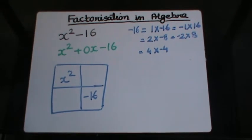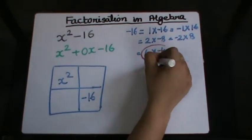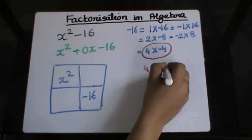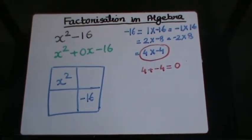I need to choose a factor pair which when combined gives me 0, which is of course 4 and -4, because when I add 4 and -4 I get 0. So this is my choice for splitting the middle term.